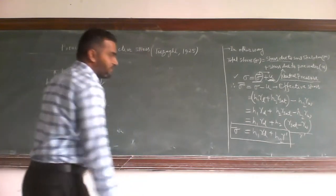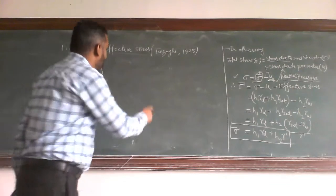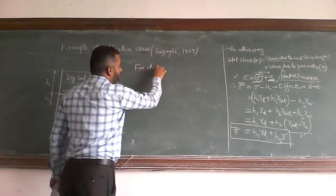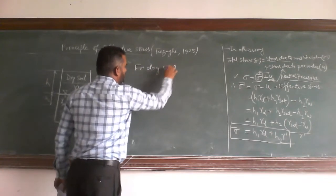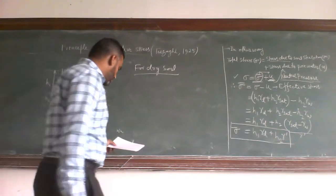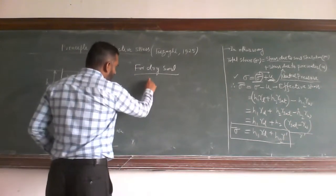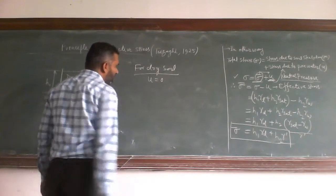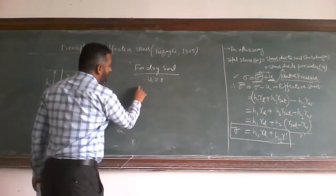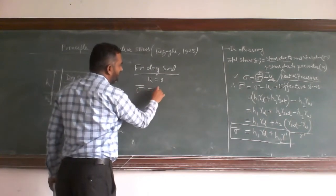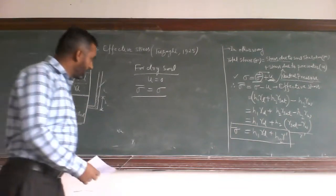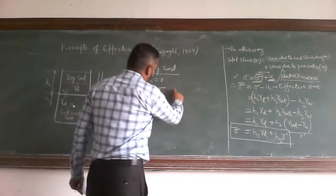Suppose if the soil is dry — if we take the formula for dry soil — the pore pressure U will be equal to zero. So the effective stress will be equal to the total stress.